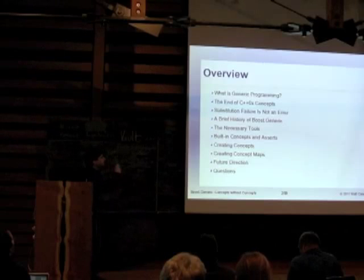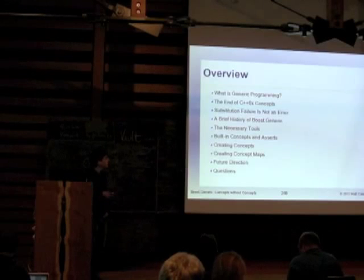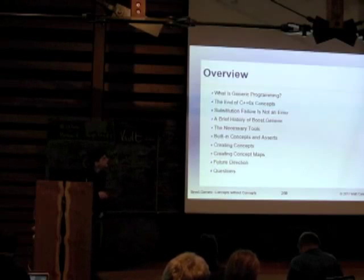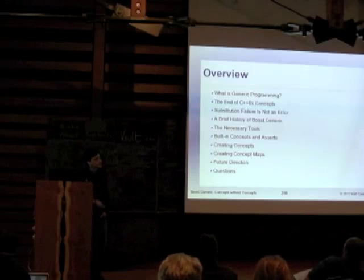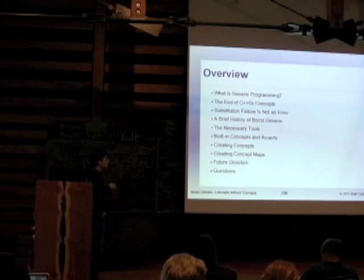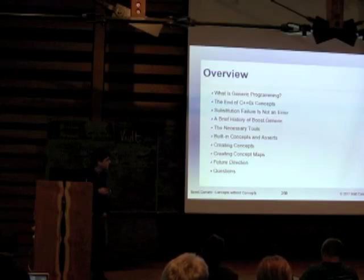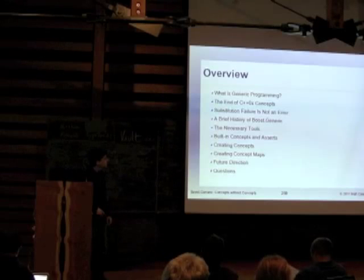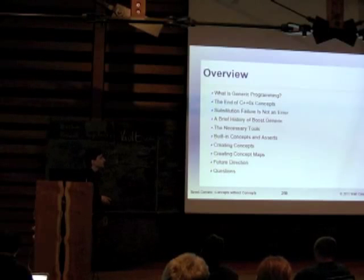Brief overview of what I'm going to go through: just a refresher on what generic programming actually is, then exactly what happened to concepts and why they're no longer in the standard. We'll go over substitution failure is not an error. There have been some changes in the new standard that impact the development of this library that I think are very interesting. Then I'll go into a brief history of Boost Generic, the necessary tools it took to get to this point, and finally the concepts themselves — basic concepts and asserts, how to create your own concepts and concept maps, and future direction.